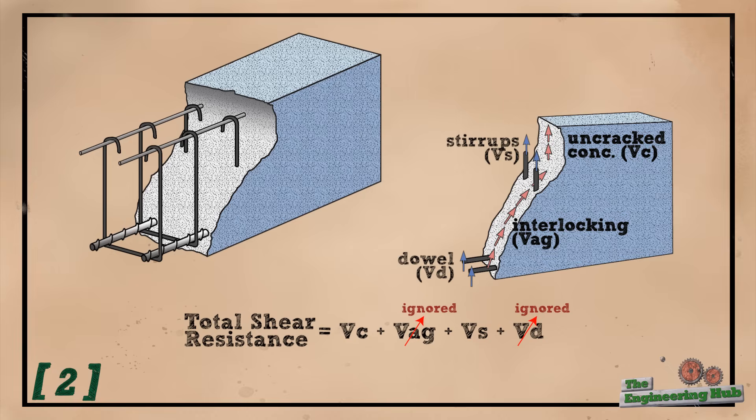For higher shear loads near the supports, the stirrups are placed closely which ensures that several of them will be engaged within an inclined crack. Near the middle of the beam, where the shear forces are low, designers tend to reduce the spacing or completely eliminate the stirrups.